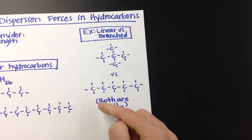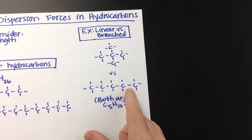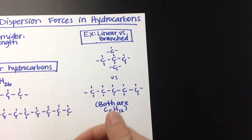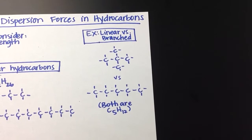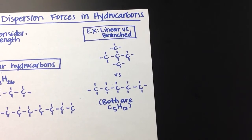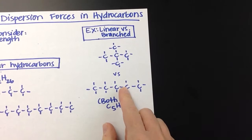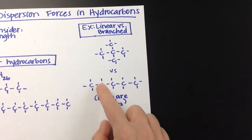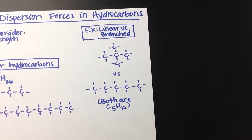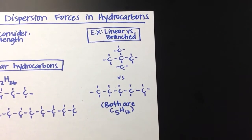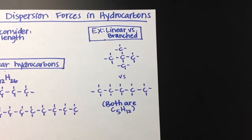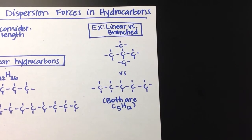And the reason for this is these are going to be in greater contact with each other. If these are stacked on top of each other, then when you have those instantaneous dipoles for those split seconds where you have London dispersion forces, if they're in greater contact with each other, you will have a higher boiling point. These are in less contact with each other because they can't stack on top of each other nice and neat. So you would expect the branched hydrocarbon to have a lower boiling point.